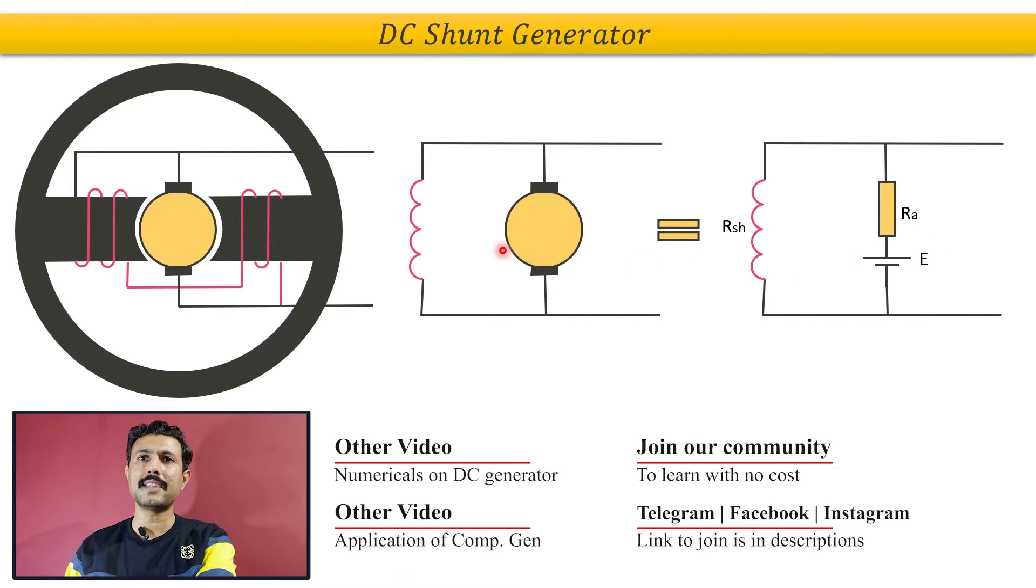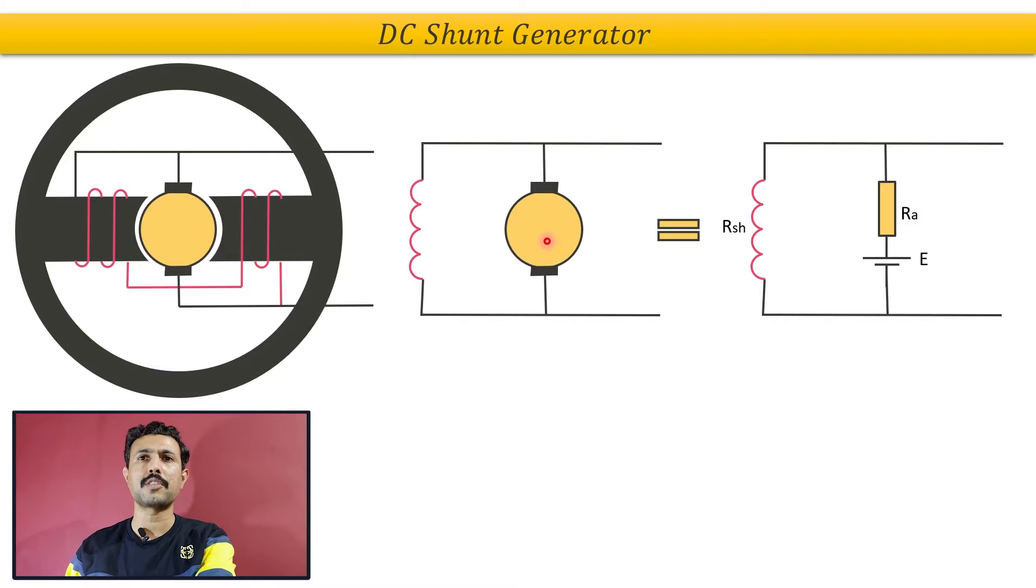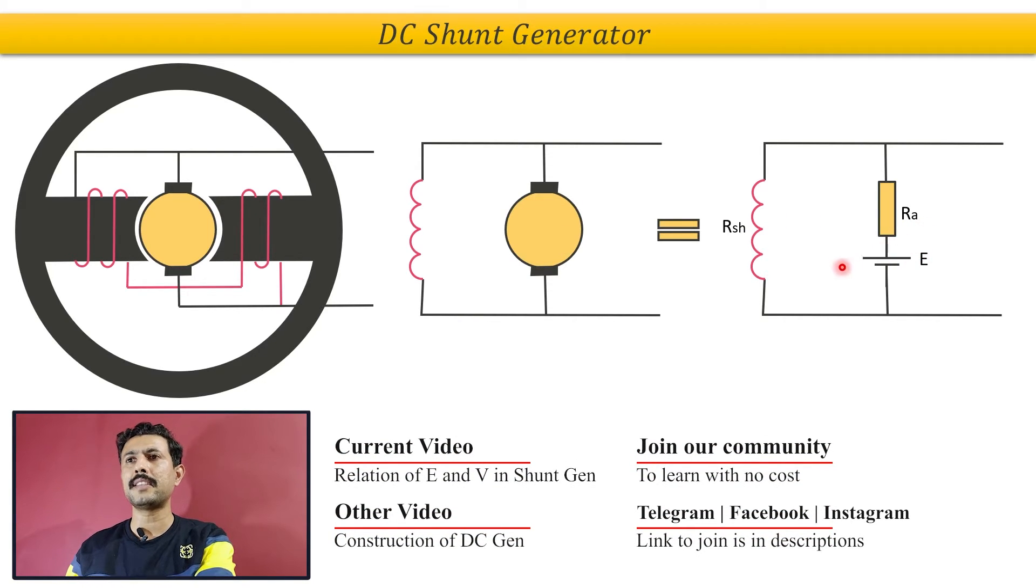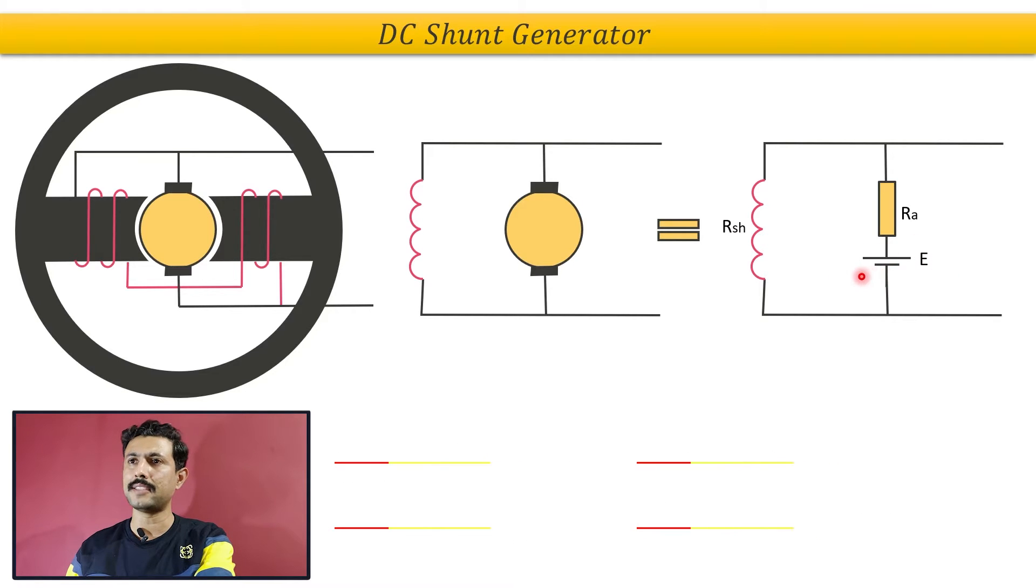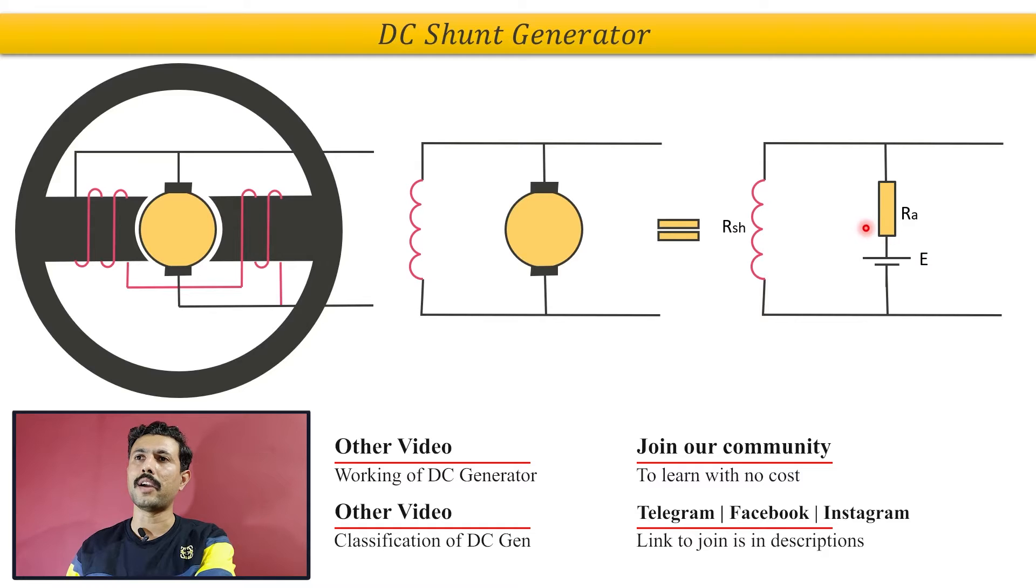This EMF basically induces in the armature coil. So this armature coil is being represented with induced EMF E as a DC source and the internal resistance of that coil with RA.